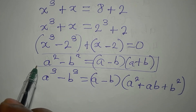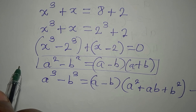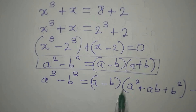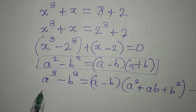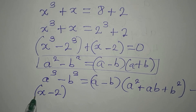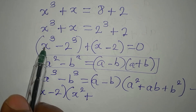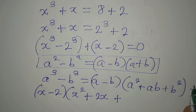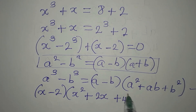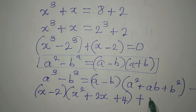We are using the difference of two cubes formula here. In place of a we have X, and in place of b we have 2. So we write (X minus 2) times (X squared plus X times 2, which is 2X, plus 2 squared, which is 4).